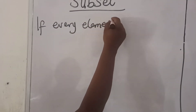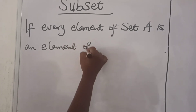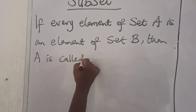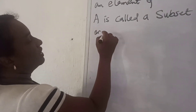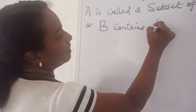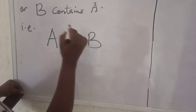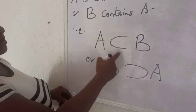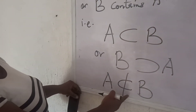Now we are going to look at subsets. If every element of set A is an element of set B, then A is called a subset of B, or we say that B contains A. We write this as A is a subset of B, or we write it as B contains A. If A is not a subset of B, then we write A is not a subset of B.